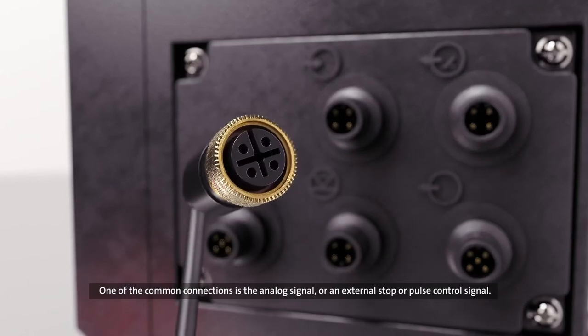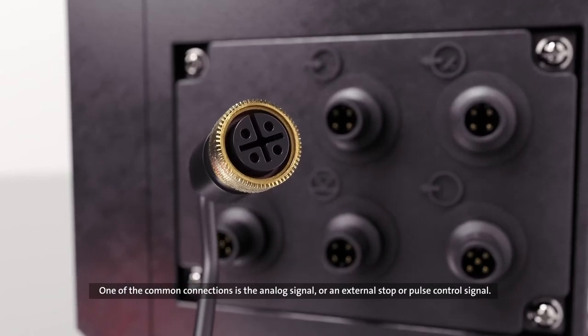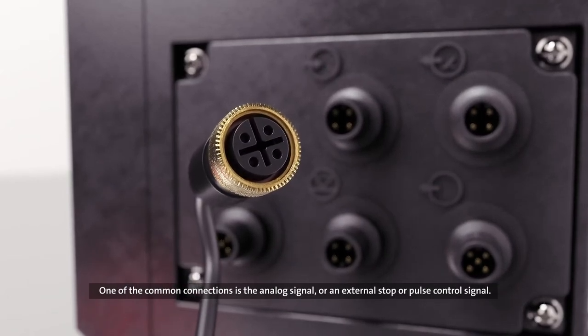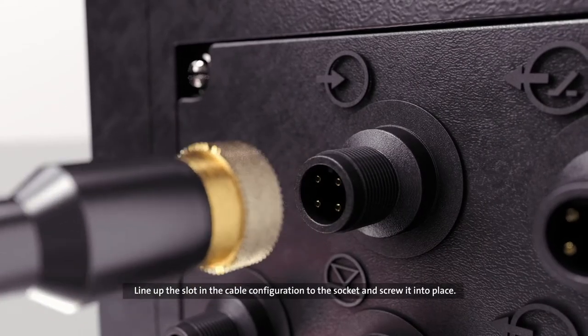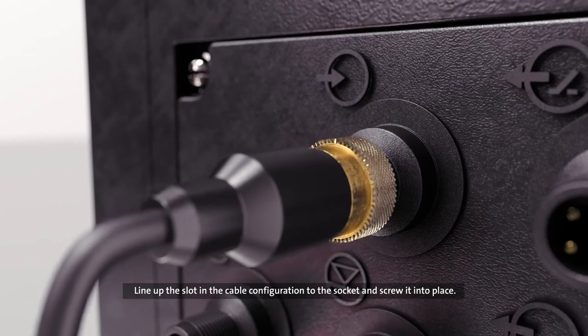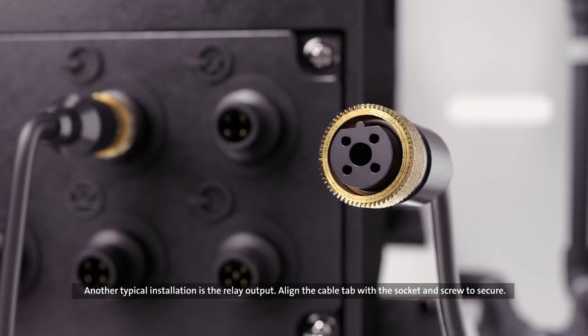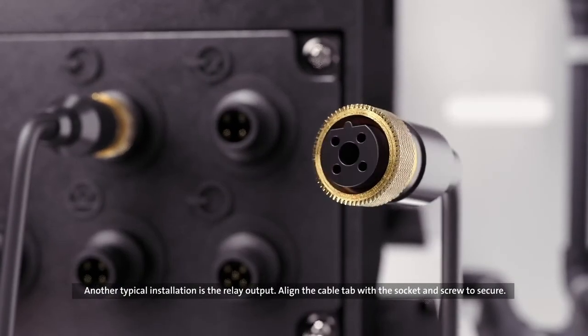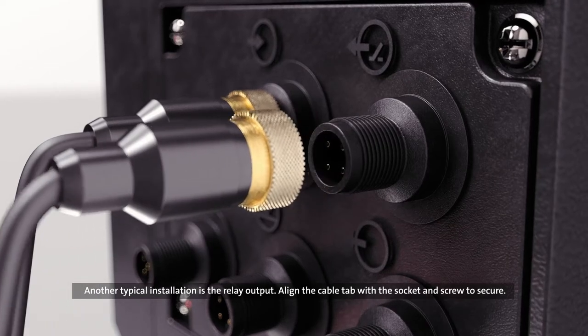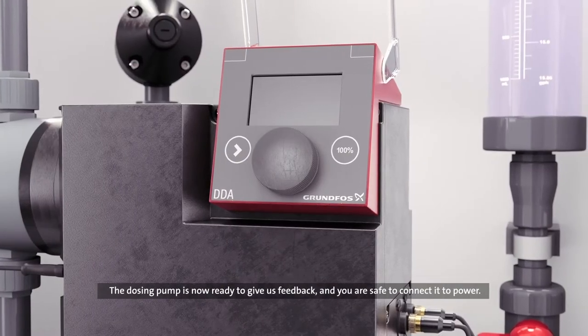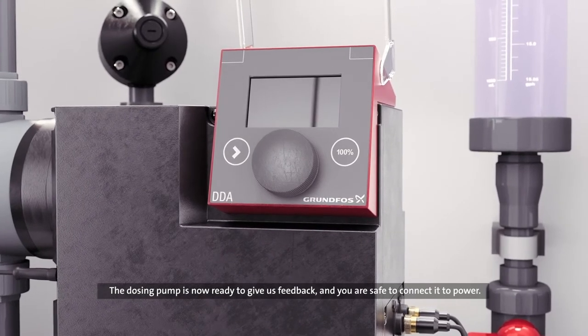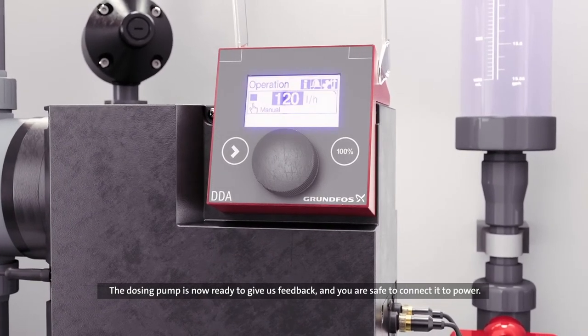One of the common connections is the analog signal or an external stop or pulse control signal. Line up the slot in the cable configuration to the socket and screw it into place. Another typical installation is the relay output. Align the cable tab with the socket and screw to secure. The dosing pump is now ready to receive input signals and give us feedback. And you are safe to connect it to power.